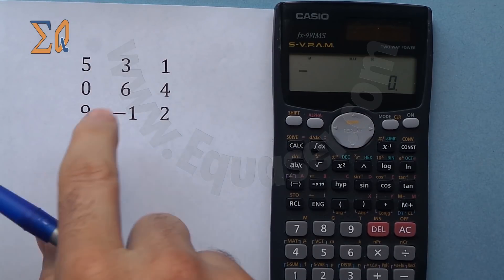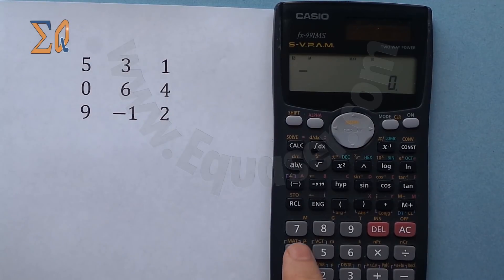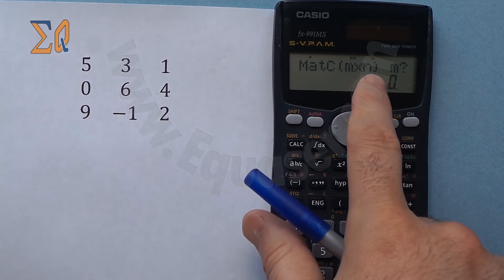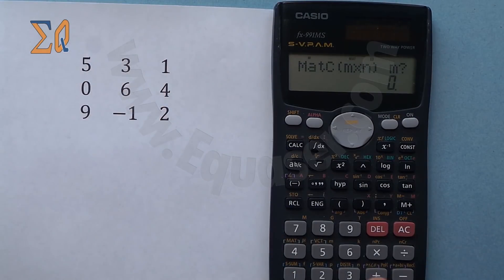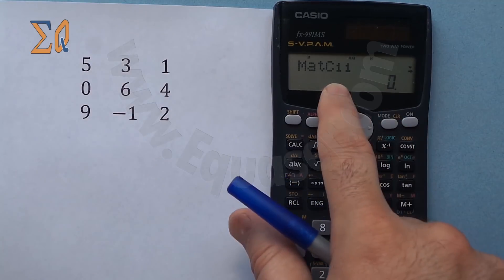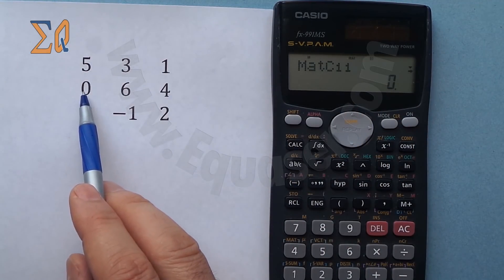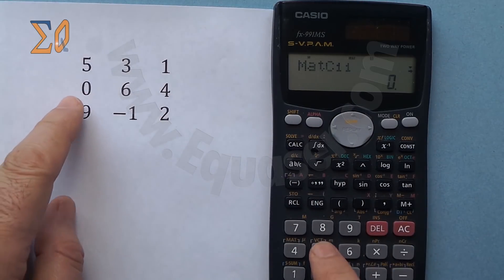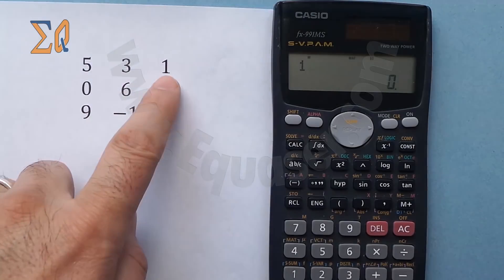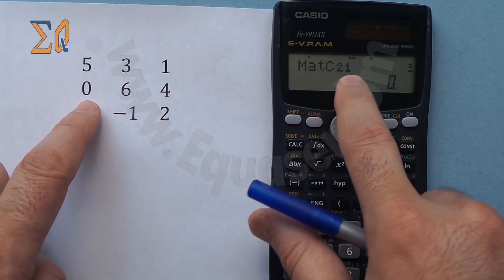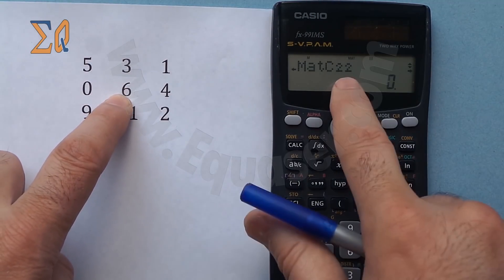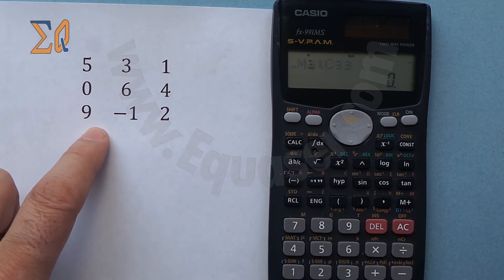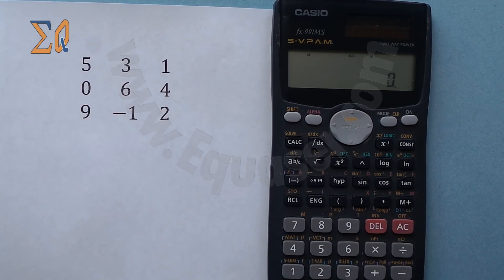Now let's enter a larger matrix — a 3x3 matrix — into matrix C. Press Shift, number four, then one for dimension, select C (option 3). The dimension is 3 by 3, so press 3, equals, 3, equals. Enter the values row by row: row 1 is 5, 3, 1; row 2 is 2, 6, 4; row 3 is 9, -1, 2. All values have been entered.